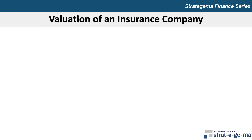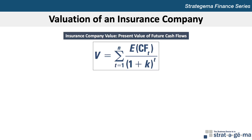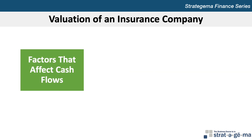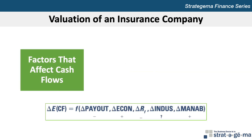The last major concept in the chapter relates to the valuation of an insurance company. Just like other types of firms discussed in previous chapters, such as commercial banks, financing companies, and mutual funds, the value of an insurance company is the present value of its expected future cash flows. As such, the value responds to changes in both expected future cash flows and the required rate of return used to discount those expected future cash flows. The change in an insurance company's expected cash flows is a function of changes in the payouts made to beneficiaries, economic growth, the risk-free interest rate, industry conditions, and management abilities.